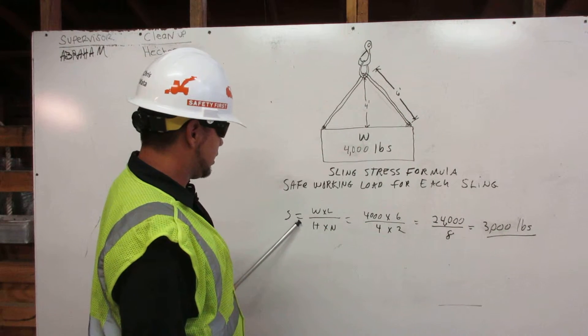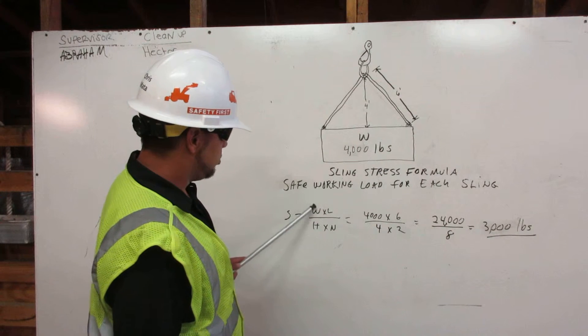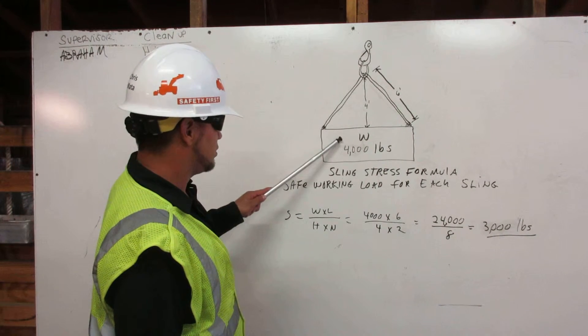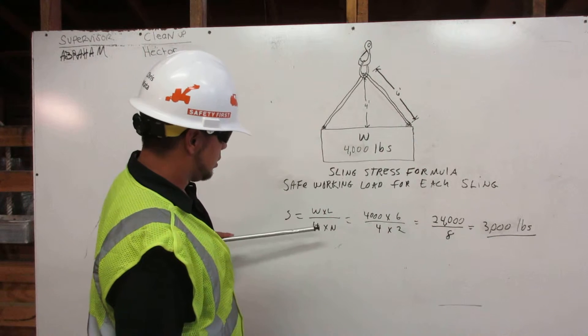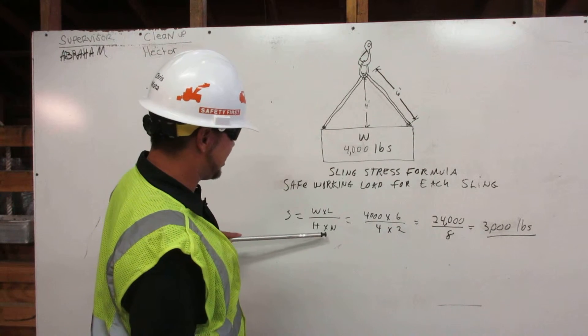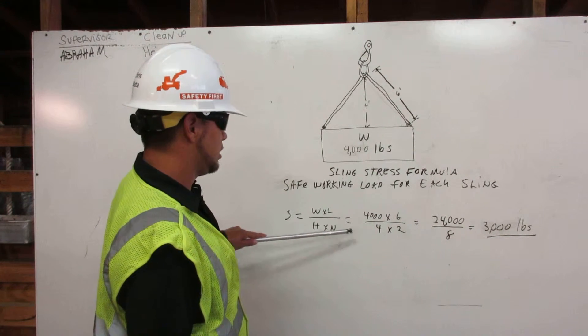The stress formula: S equals W times L, which is weight times length, divided by H times N, which equals height and number of slings.